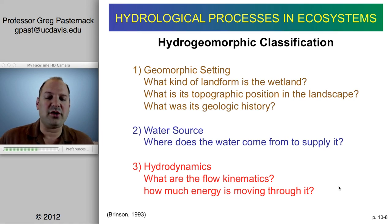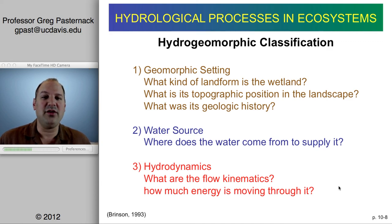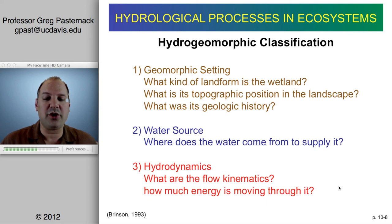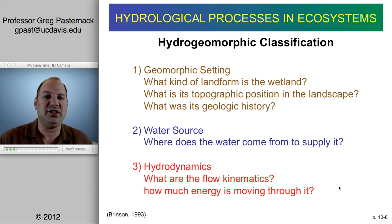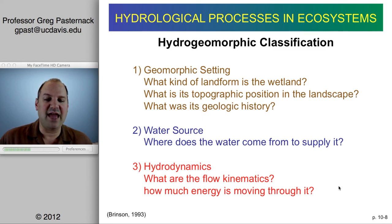In terms of the water source: where does the water come from to supply the wetland? This generally means precipitation, water coming from a river during a flood, or groundwater discharging out of the ground — those are examples of the sources of water.